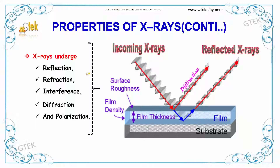X-rays undergo reflection, refraction, interference, diffraction, and polarization. You can see the incoming rays which are diffracted and reflected. This illustrates a thin film and a rough surface with a substrate, showing how X-rays interact with these structures.